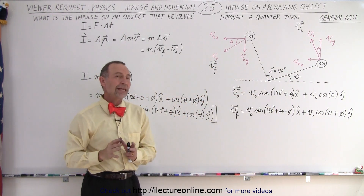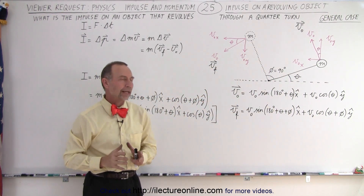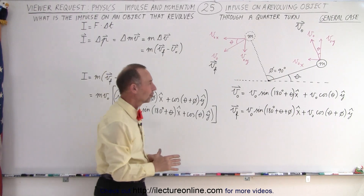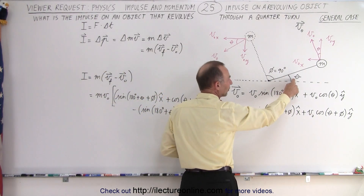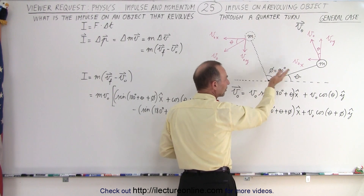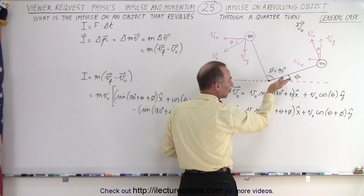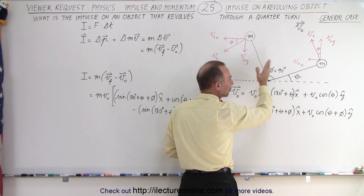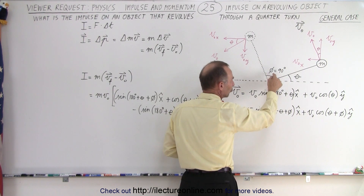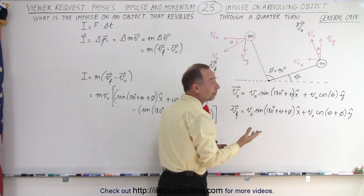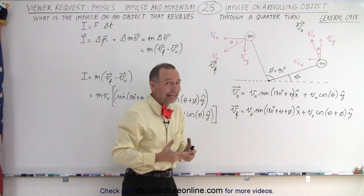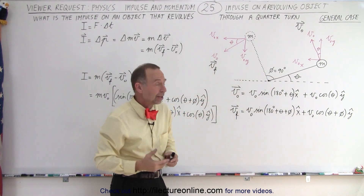Here we're going to take a more general case. The starting point could be at any angle theta, and the amount of angle that we travel through can also be any amount. In this case we said let phi equal 90 degrees, but we can make it any value.